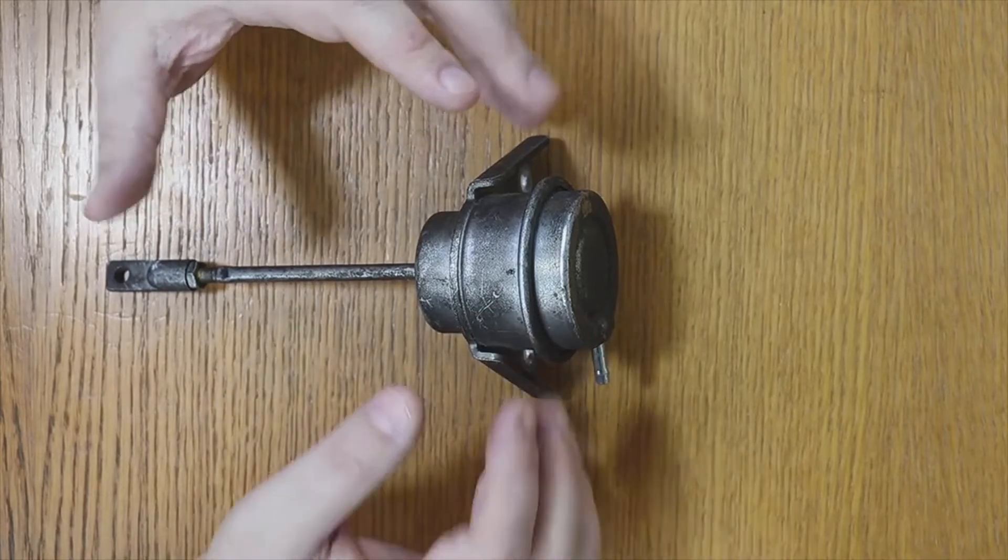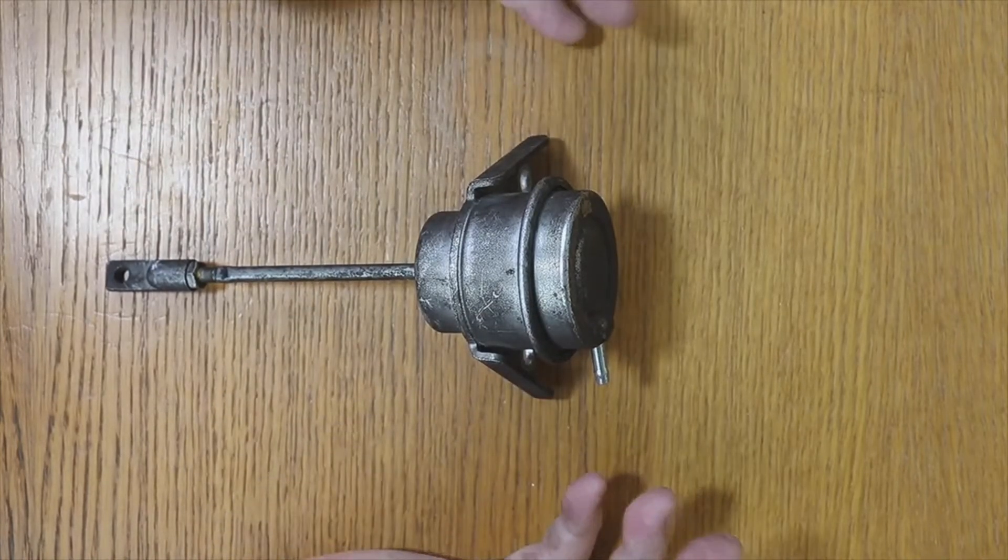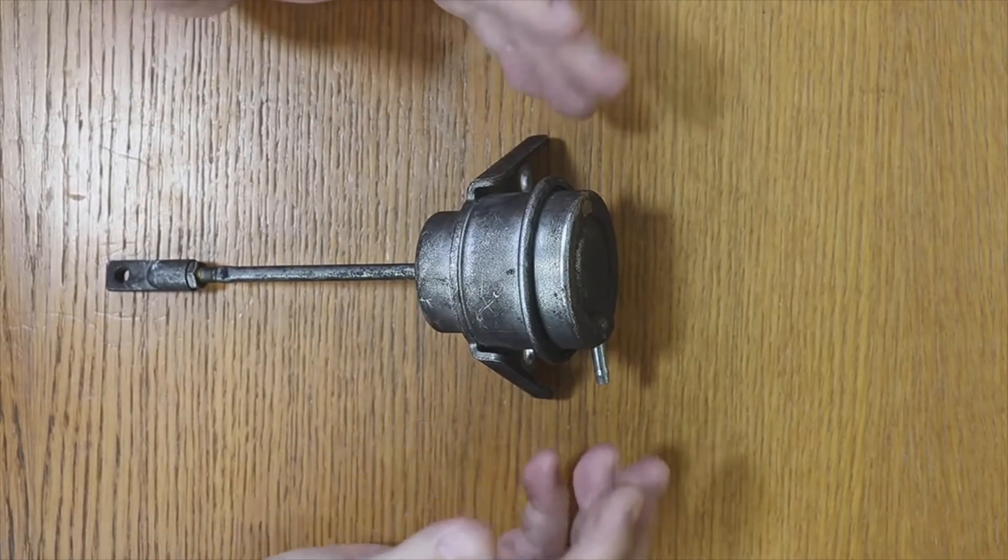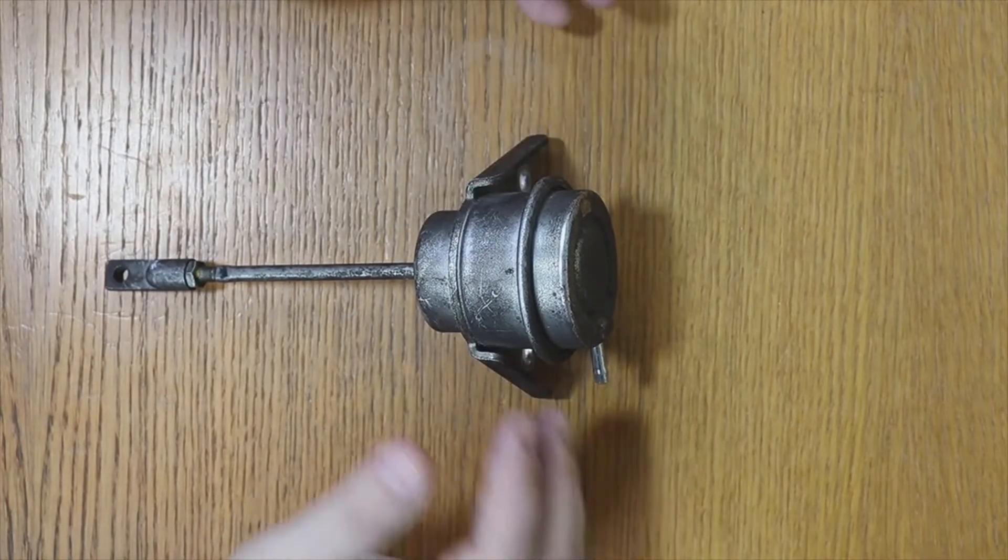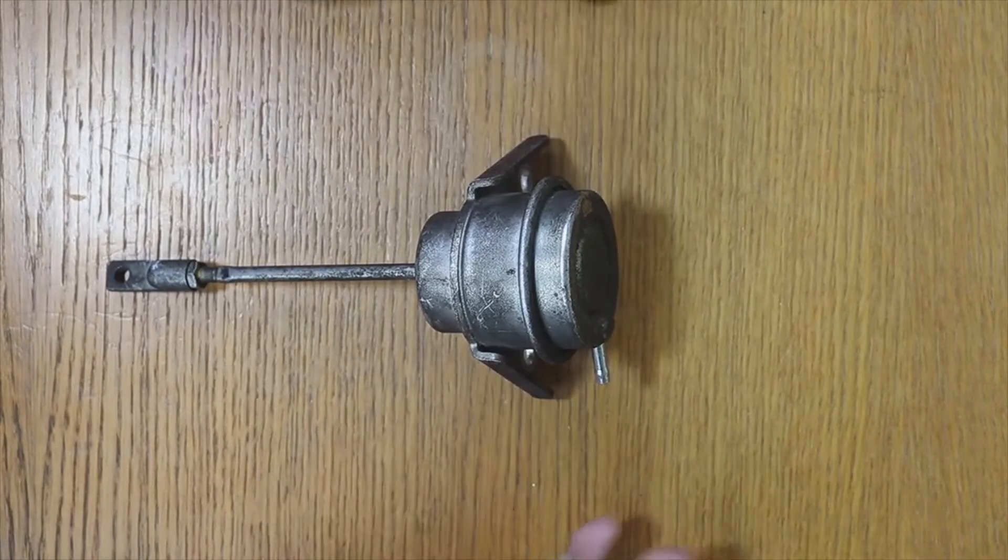For example, that creates that vacuum only, you cannot put a turbo actuator that will be between 2 bars and the maximum would be between 2 and 3 bars. Why?